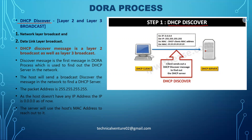The second message — Offer — is from the DHCP server to the DHCP client, and it would be a unicast message. The third message — Request — is a broadcast message. The fourth message — Acknowledge — is a unicast message. That's the simple answer.